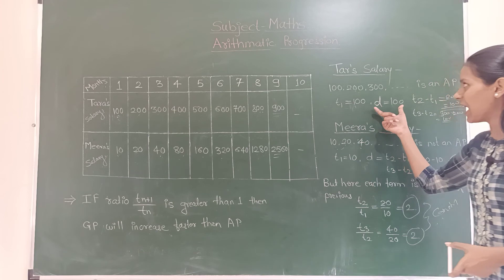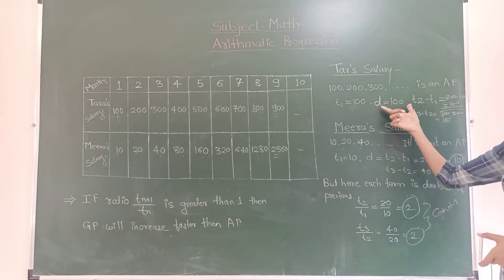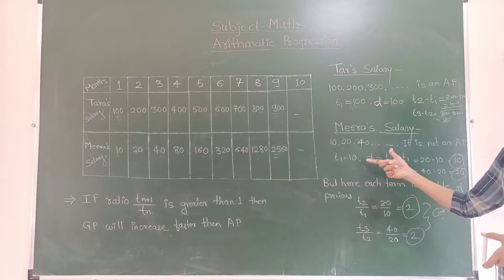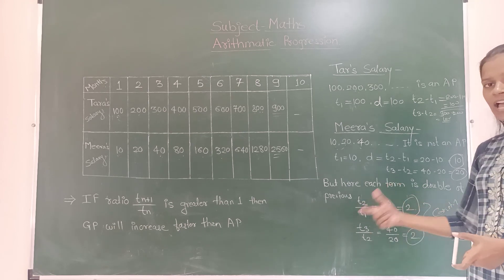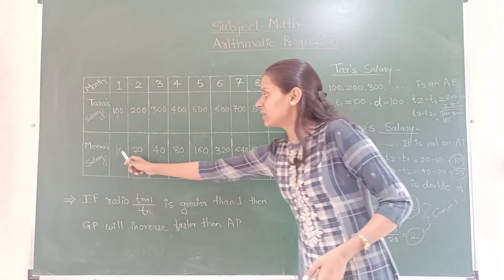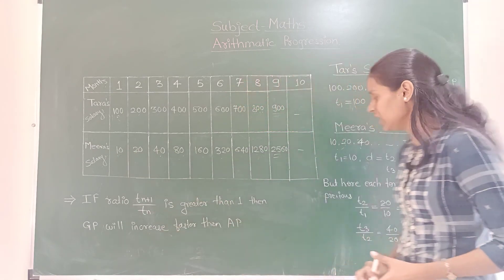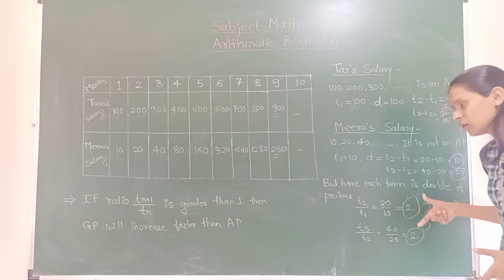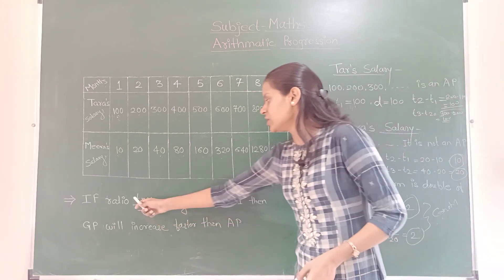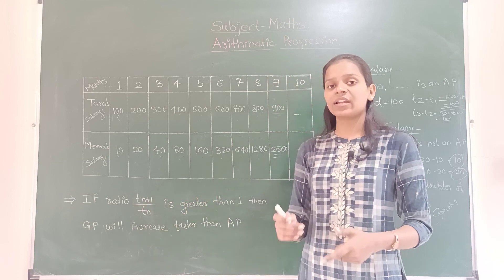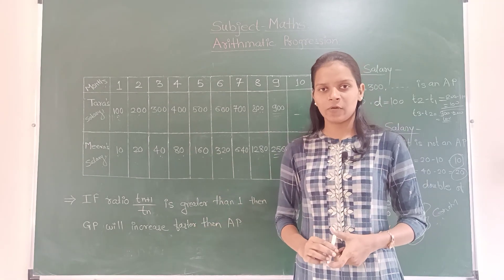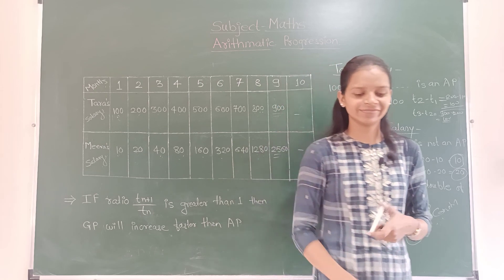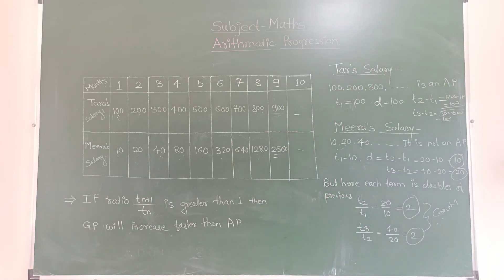So to summarize: Tara's salary is an arithmetic progression because the common difference is constant. Meera's salary is a geometric progression because each term is double the previous term — the ratio is constant at 2. When the ratio Tn+1 upon Tn is greater than 1, geometric progression increases faster than arithmetic progression. Thank you.